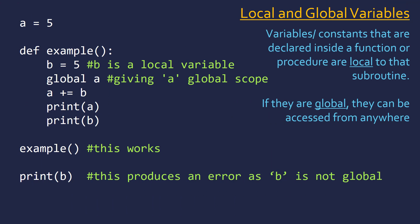We're now going to talk about local and global variables. A variable or constant declared inside a subroutine is said to be local to that subroutine, whereas a global variable is able to be accessed from anywhere. In this example, variable B is only initialized inside the subroutine 'example', so B is a local variable — only local to this subroutine. Whereas A is outside the subroutine, so it has at least class scope; we're actually declaring it to be a global variable, so A is accessible from anywhere in the code, including within the subroutine. We're adding 5 to B, so A is now 5 at this stage — we print out A and get 5, and when we print B inside the subroutine we still get 5. This is calling the subroutine out of line.